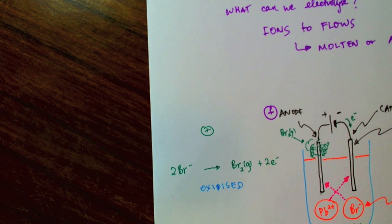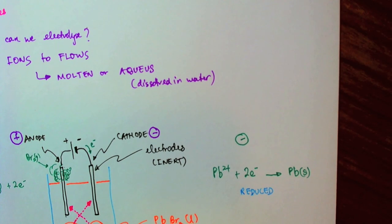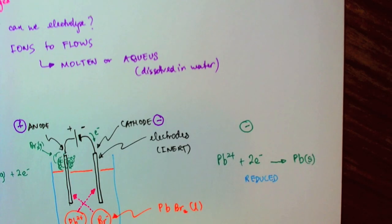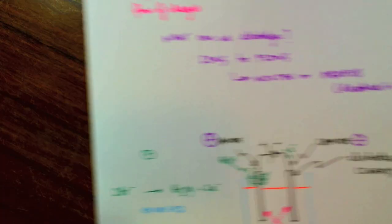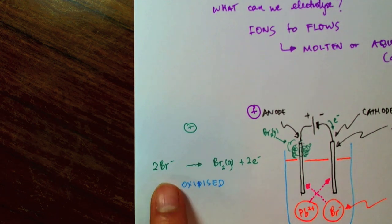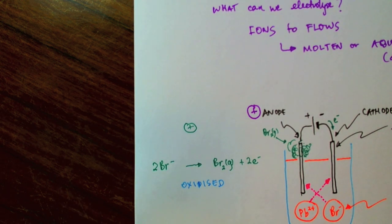So, to summarize, what happened at the cathode was that a lead solid is formed. And what happened at the anode was that bromine got discharged and formed bromine gas.